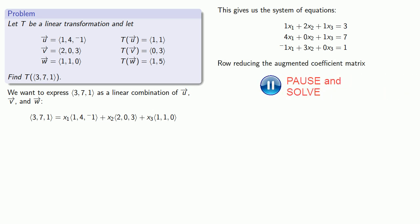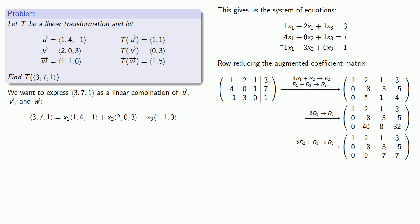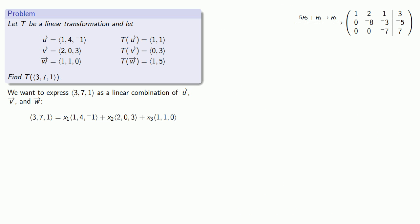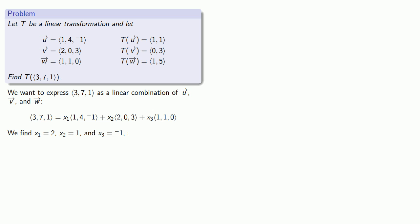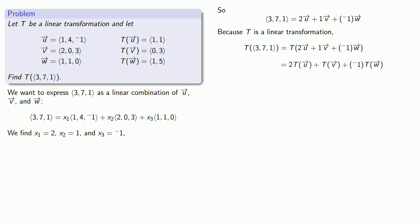We can row-reduce, then back-substitute, to find our coefficients. After all the dust settles, we find that x1 equals 2, x2 equals 1, and x3 equals negative 1. So the vector [3, 7, 1] equals 2U plus 1V plus negative 1W. Because it's a linear combination of U, V, and W, the transformation acting on this vector is 2 times T of U, plus 1 times T of V, plus negative 1 times T of W. Substituting those known values in, we get the result — the vector [1, 0].